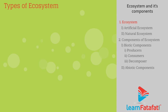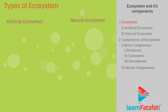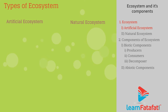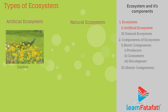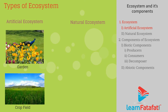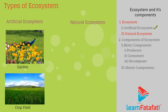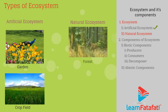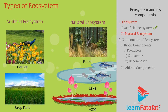Types of ecosystem. An ecosystem can be artificial or natural. Artificial ecosystems are man-made ecosystems — for example, gardens and crop fields. Natural ecosystems are ecosystems that are produced naturally — for example, forests, lakes, and ponds.